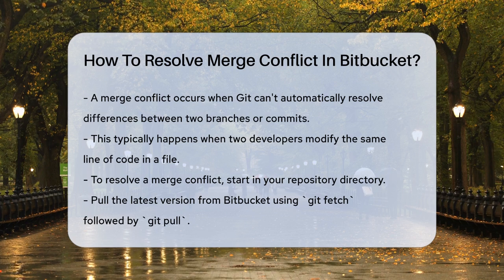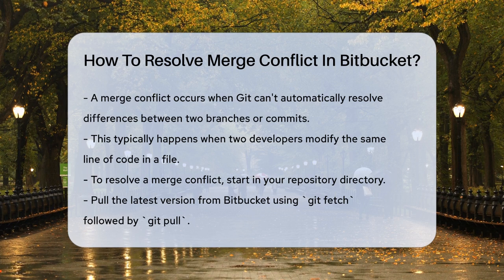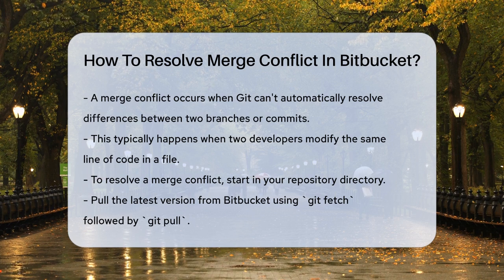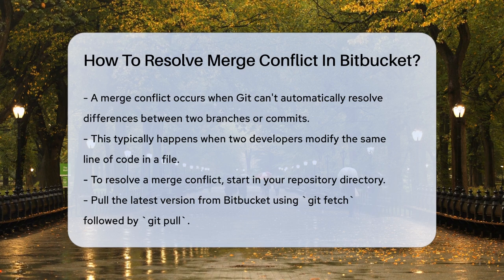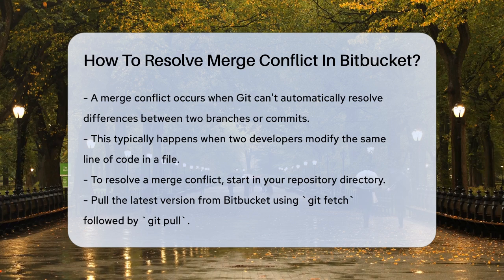First, let's understand what a merge conflict is. It happens when Git can't automatically resolve differences in code between two branches or commits. For example, if two developers change the same line of code in a file, Git gets confused and doesn't know which version to keep. To resolve this, you need to follow some steps.